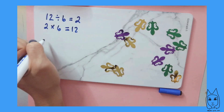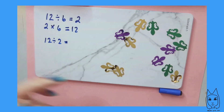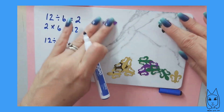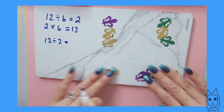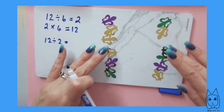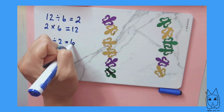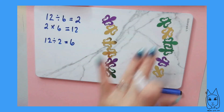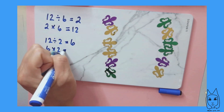A related fact: 12 divided by 2. I take the 12 and divide them into 2 equal groups, just keep dividing them into these 2 equal groups. And when I'm done, I have 2 groups of 1, 2, 3, 4, 5, 6. So 12 divided into 2 groups gives me 6. I have 2 groups of 6, which is 6 times 2, which is 12.